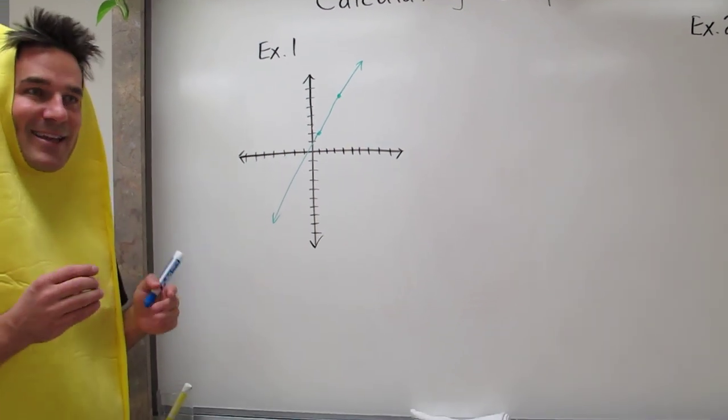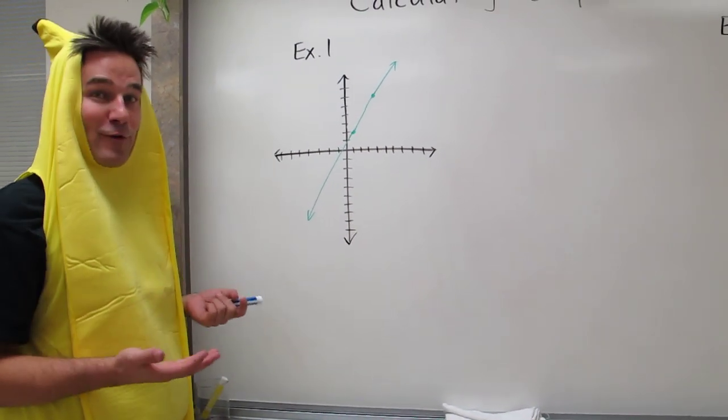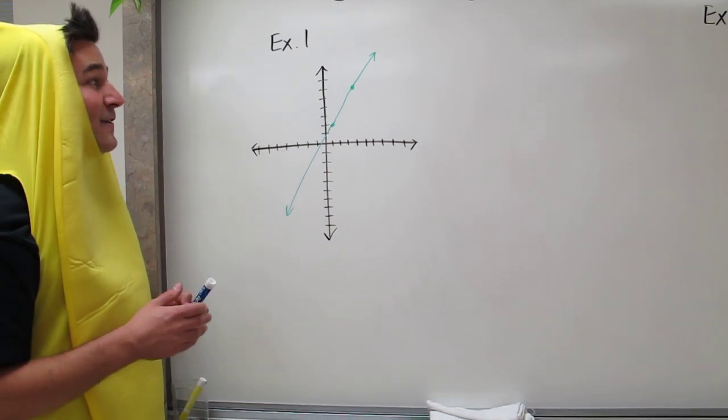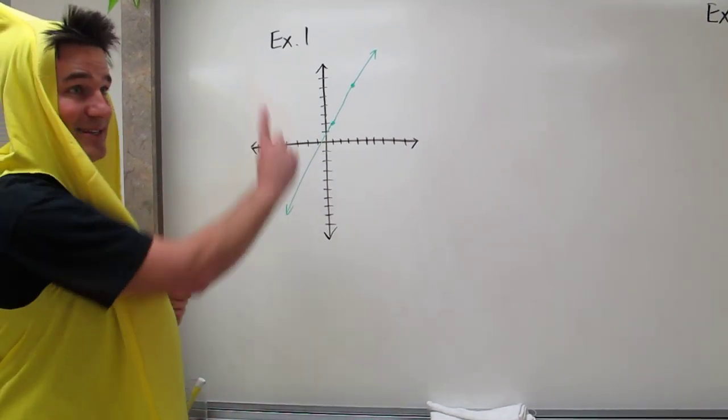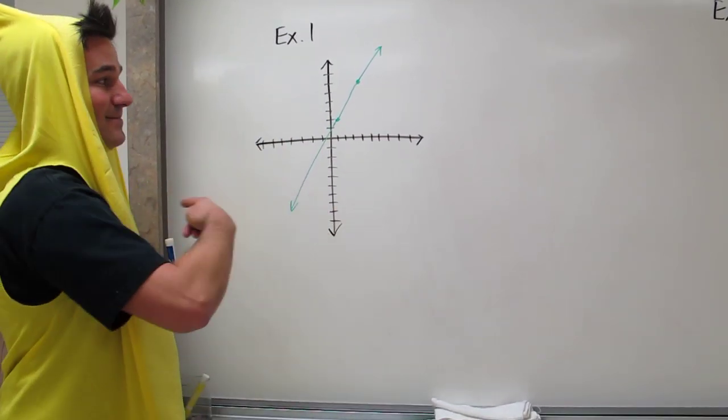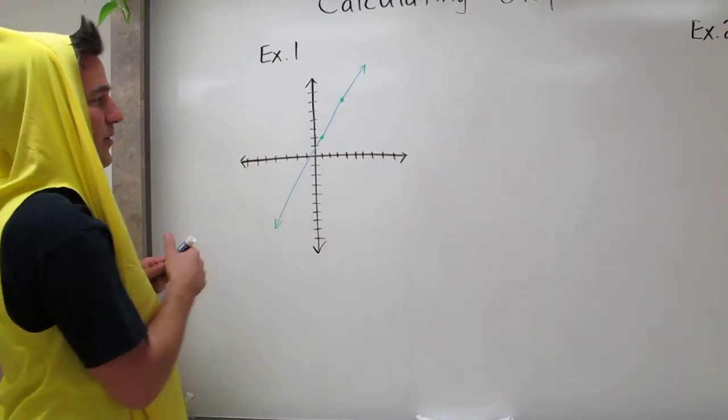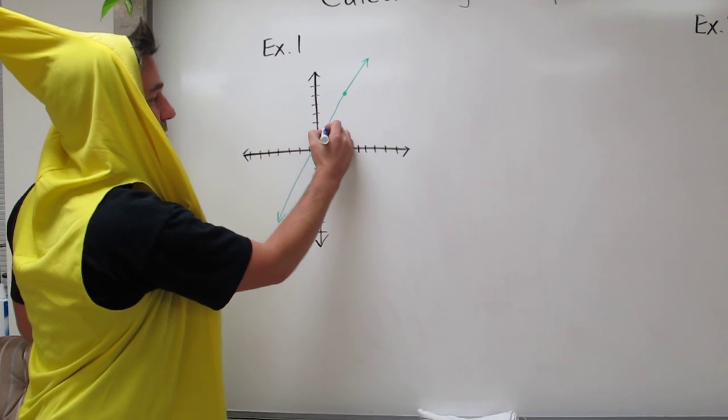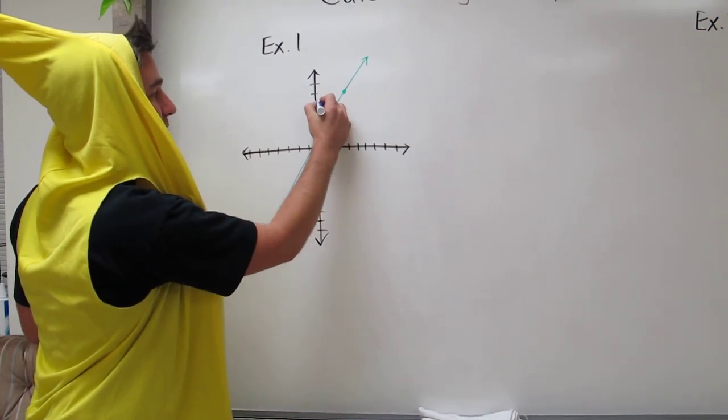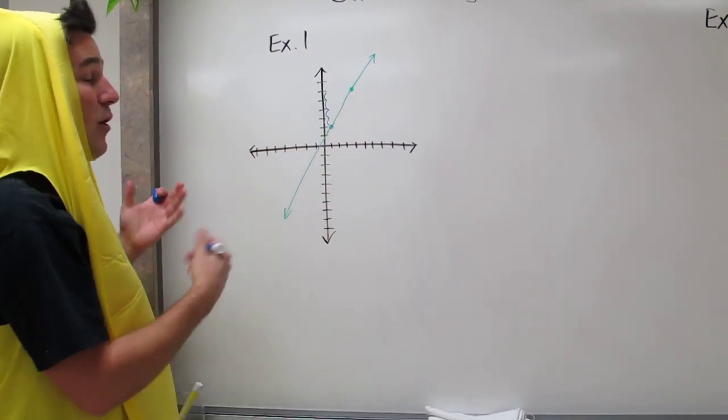The slope is exactly the ratio of rise over run in a line. So we need to figure out how much this line rises and how much does it run. So let's figure out rise. From this point to this point, it looks like we rise 1, 2, 3, 4. We go up 4.